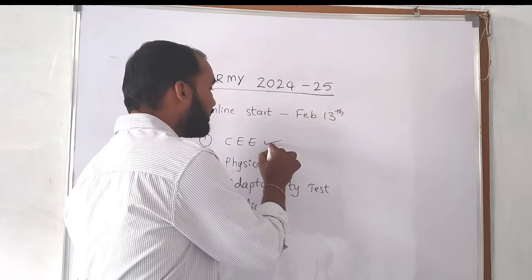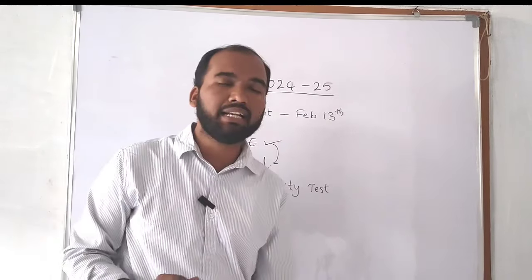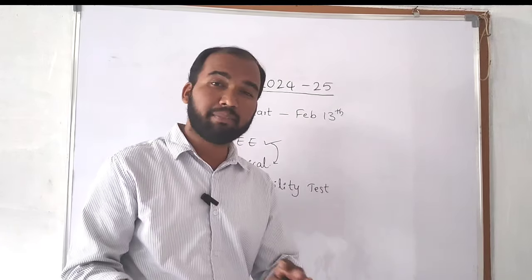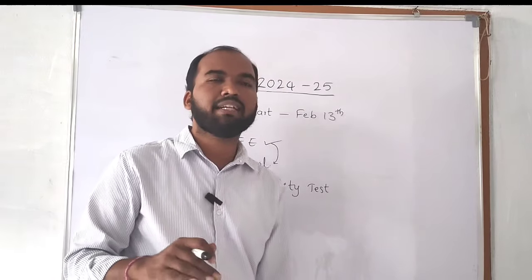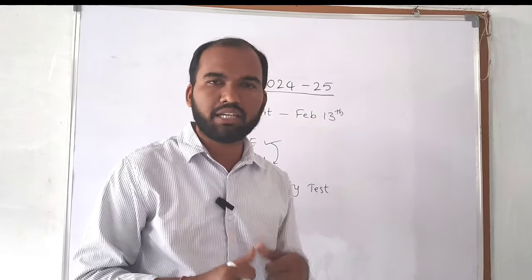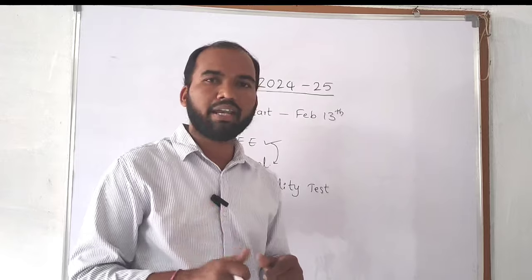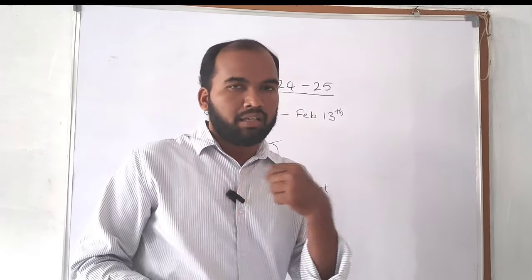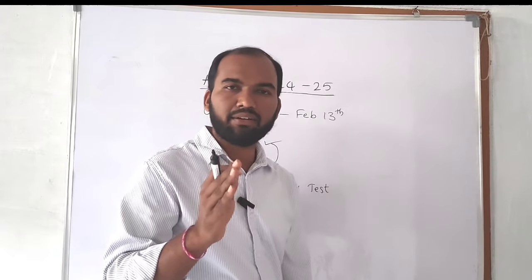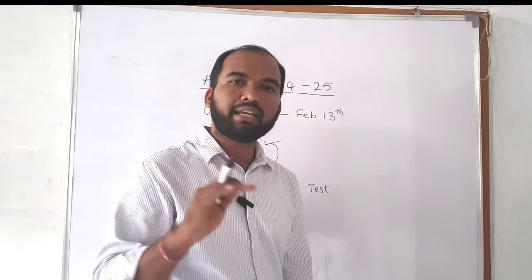The next level after qualifying CEE is the Physical Test. This includes Physical Measurement - height, weight, and chest - and the Physical Efficiency Test, which involves 1.5km running and 6.5km running.